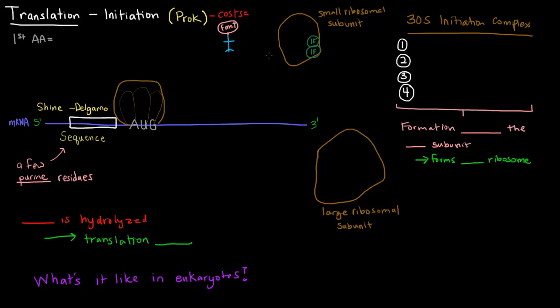So what's going to go over to that AUG first? Well, there's this 30S ribosomal subunit, and that's going to be the small ribosomal subunit, and it is going to go to that AUG along with a few other things to form what's called the 30S initiation complex. So that 30S initiation complex consists of four different things.